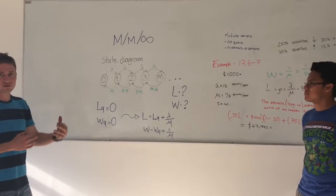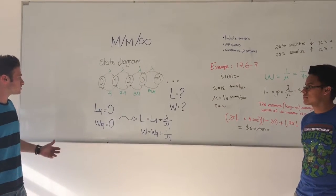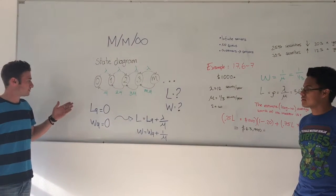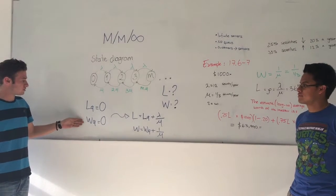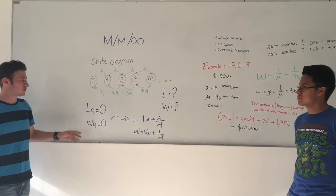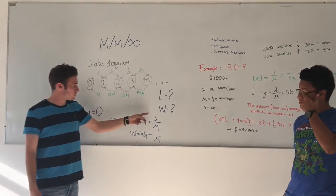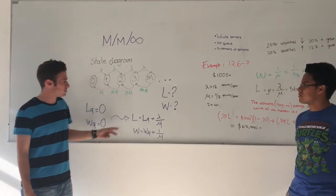Also, in this case, the customers are the servers. So that's why the number of people in the queue and also the wait time of the queue are zero. That's why we have to eliminate these variables in these two formulas.